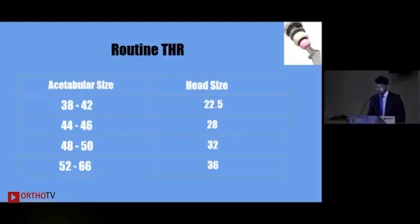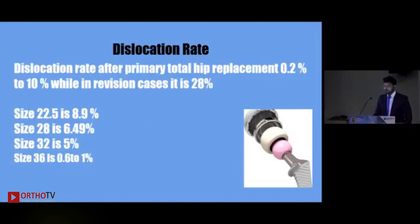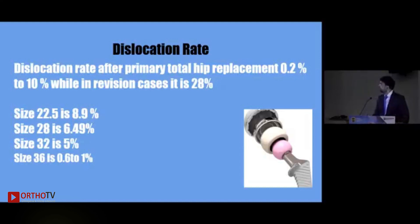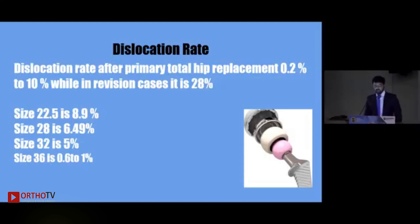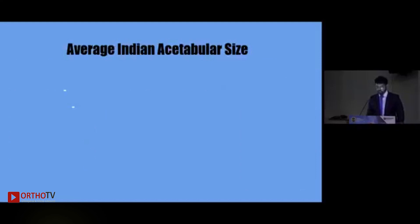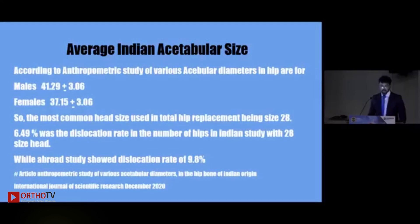The dislocation rate depends on the size of the head being used. Size 22.5 mm shows the highest dislocation rate at 8.5%, size 28 mm is 6.49%, size 32 mm is approximately 5%, and size 36 mm is 0.6 to 1% dislocation rate.